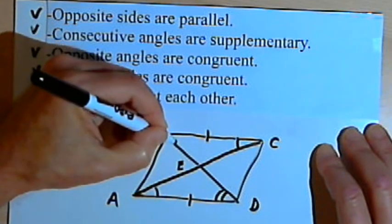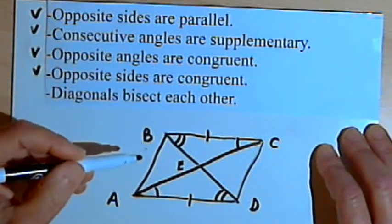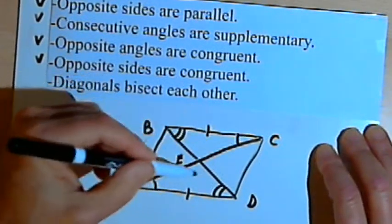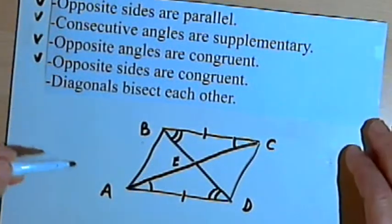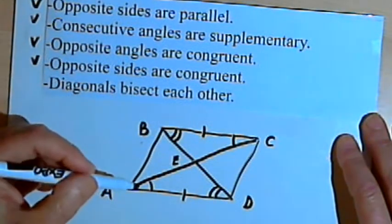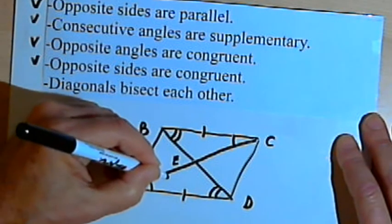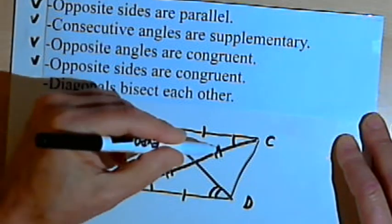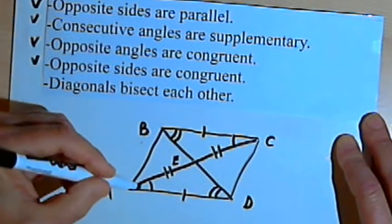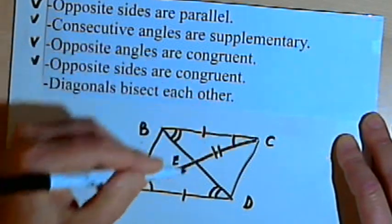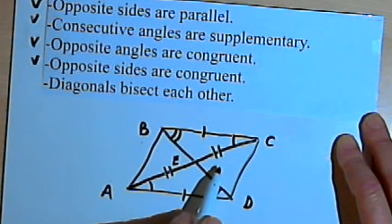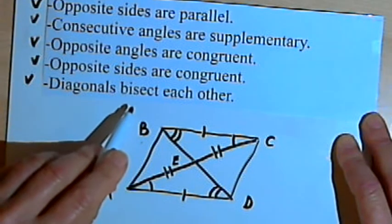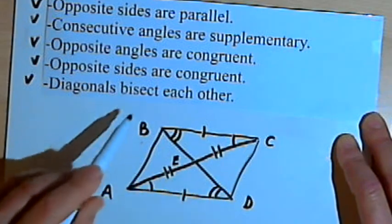These diagonals are transversals, so the alternate interior angles formed by those transversals are congruent. I'll label those congruent angle pairs. Now I've got triangle CBE congruent with triangle ADE by angle-side-angle congruency. Since those triangles are congruent, their corresponding sides are congruent — meaning side AE is congruent with side CE. Therefore diagonal AC has been cut into two equal segments, so it's been bisected. We can show the same thing for diagonal BD, so the diagonals bisect each other.